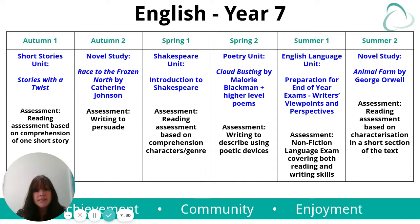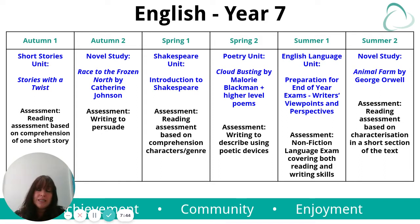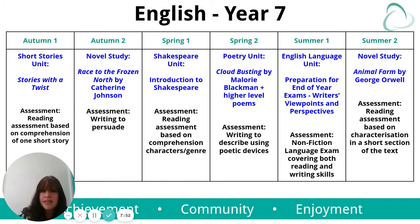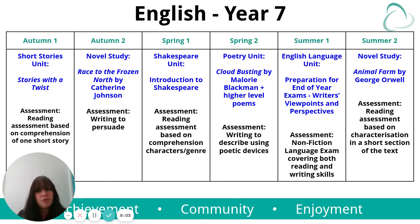In English in Year 7, pupils study a range and depth of literature. We open with a short stories unit — 'Stories with a Twist' — a very enjoyable unit and a really nice way to start the year, developing the skills which underpin further study. They study a range of short stories including things like 'All I Said Was' or 'Lamb to the Slaughter' by Roald Dahl, and the assessment is a reading-based assessment on one of those short stories.